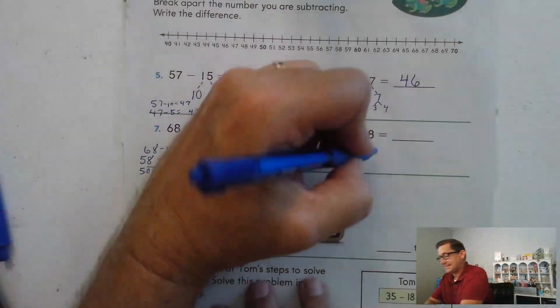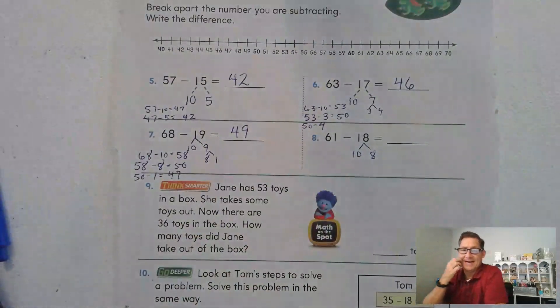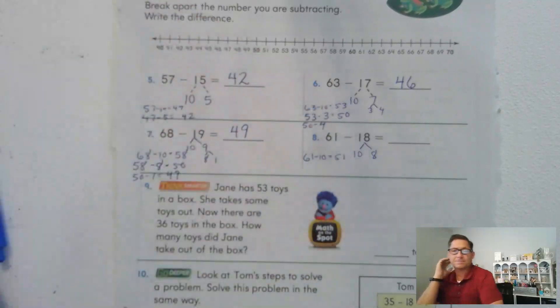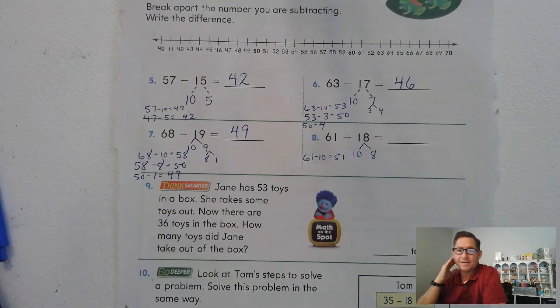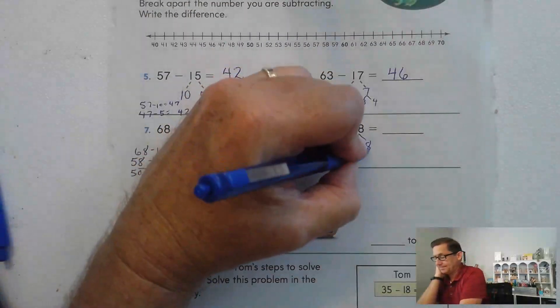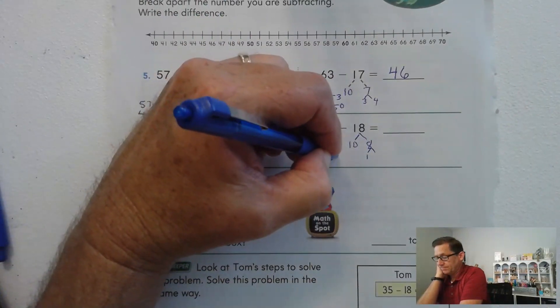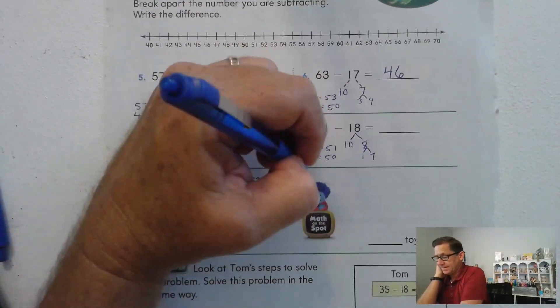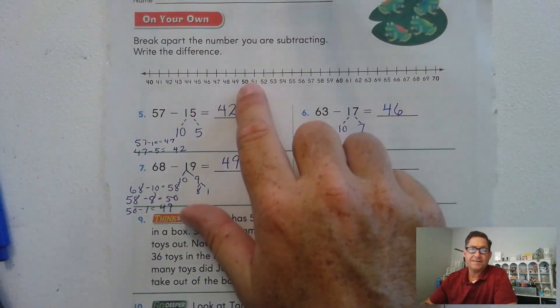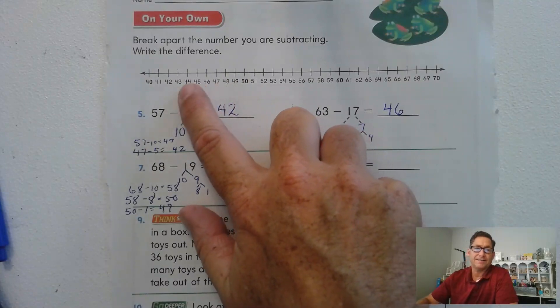61 minus 18. Break the 18 into 10 and 8. 61 minus 10 is simply 51. What do we want to subtract from 51 to make it into a 10? 1. So 51 minus 1 is 50. And now we have to subtract 7 from 50. So if we need to, go up to 50 and subtract 7: 1, 2, 3, 4, 5, 6, 7. 43.